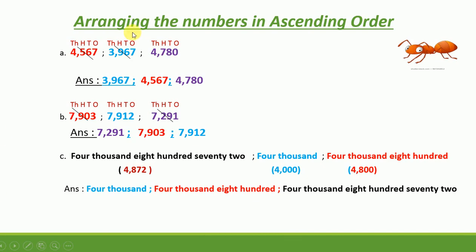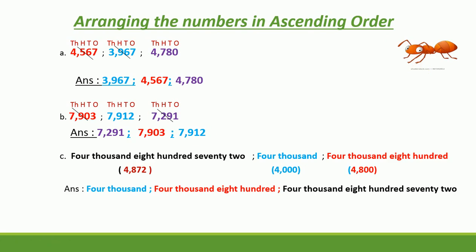Now I am going to tell you a small hint to remember ascending order. Ascending order means arranging numbers from smallest to greatest. The first letter of ascending order is A. Can you see the picture given? It is an Ant. The first letter of ant is also A. Ascending order — always remember the ant. Ant is a small one. So ascending order means arranging from small to greatest. This is how you can remember ascending order.